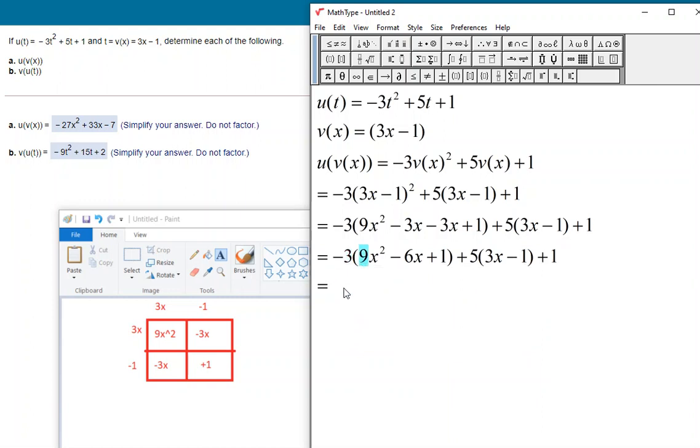So first of all, the negative 3 times the 9x squared. 3 times 9 is going to give us negative 27x squared. Then a negative 3 and a negative 6. That's going to give us a positive 18x. And a negative 3 and a positive 1 is going to give us a negative 3. That finishes the trinomial distribute. I've got my three terms as I multiply the negative 3 by each of those. And we're going to do this binomial distribute with the 5 times the 3 is 15x. And the 5 times the negative 1 is our negative 5. And then our plus 1 trailing off there at the end.